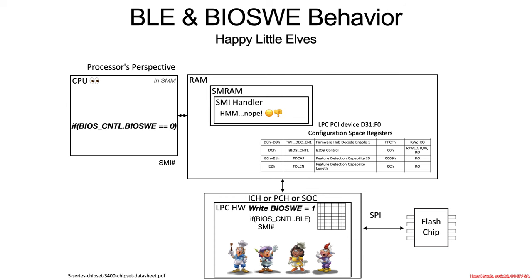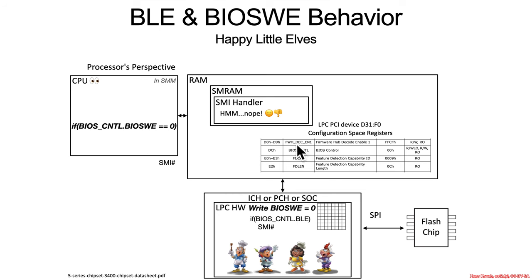The processor stops what it was doing, transitions into system management mode, and the SMI handler — the system management interrupt handler — decides whether to allow the software to keep BIOS write enable equal to 1. In this case it says no, and rewrites it back to 0. From the CPU's perspective, it looks like you wrote a 1, but when you try to read it back in the very next few instructions, you see it's still 0 — as if the write was discarded. But it wasn't simply discarded: behind the scenes a write occurred, an interrupt fired, the handler ran, and then it decided whether to allow the result.